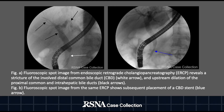Figure A: fluoroscopic spot image from endoscopic retrograde cholangiopancreatography reveals a stricture of the involved distal common bile duct, denoted by the white arrow, and upstream dilation of the proximal common and intrahepatic bile ducts, shown by the black arrows. Figure B: fluoroscopic spot image from the same ERCP shows subsequent placement of a CBD stent, denoted by the blue arrow.